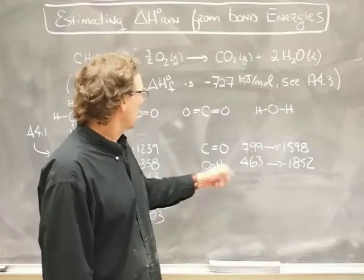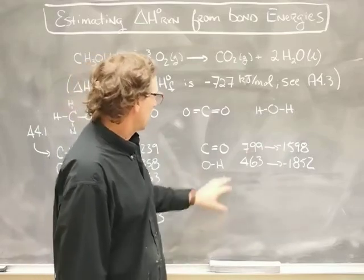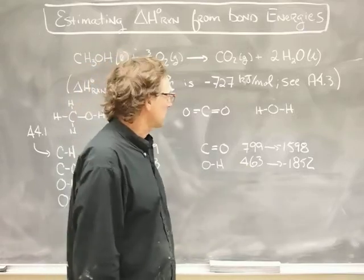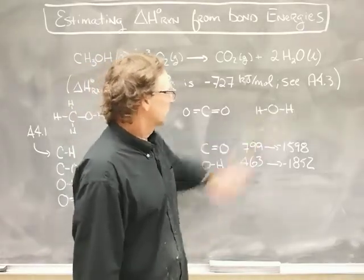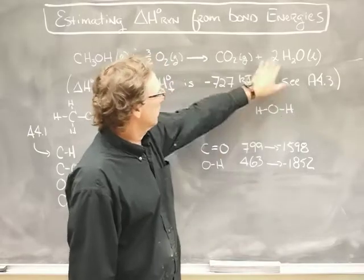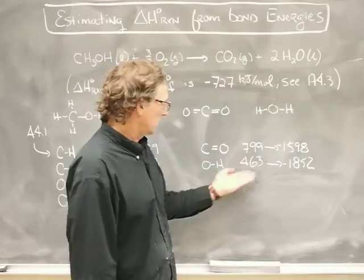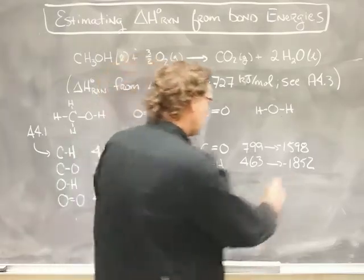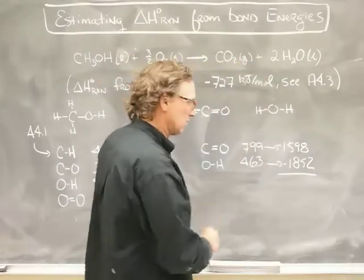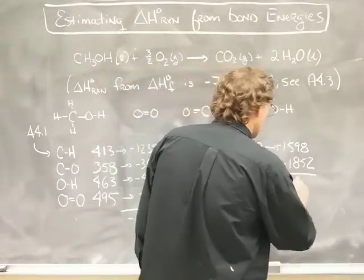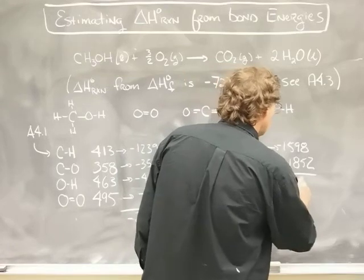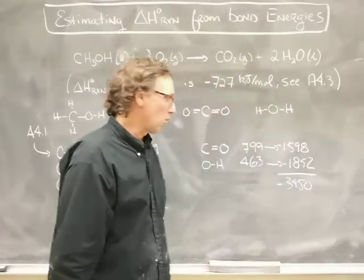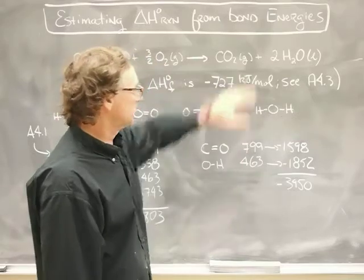For O-H in water, 463 is the bond strength. I have two of those bonds per water, but we've got two water molecules, so I'm going to multiply that by minus 4 to get that figure. Now we add those two numbers up, and we get minus 3450 kilojoules per mole for the total bond energy of the products.